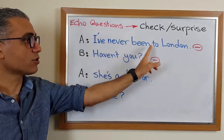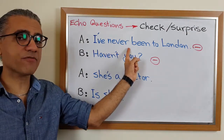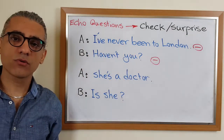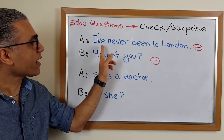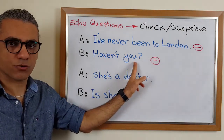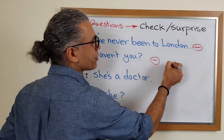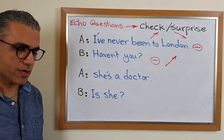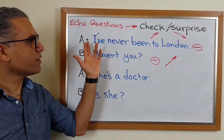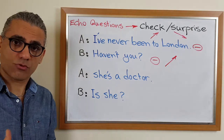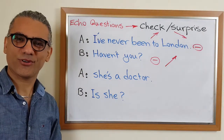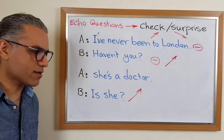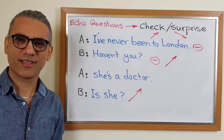For example: 'I have never been to London' — though it looks positive, because of 'never' it's considered negative. So the echo question is 'Haven't you?' — 'I have never been to London. Haven't you?' — really asking; or 'I've never been to London. Haven't you?' — expressing surprise. 'She's a doctor. Is she?' — asking. 'She's a doctor. Is she?' — expressing surprise.